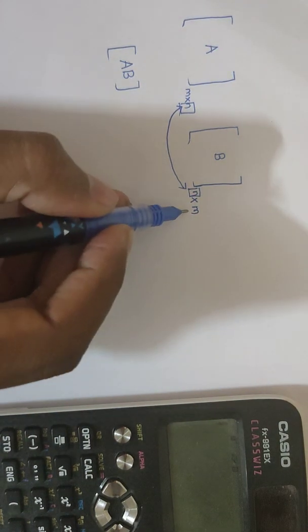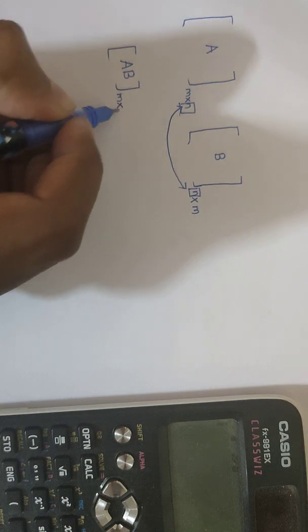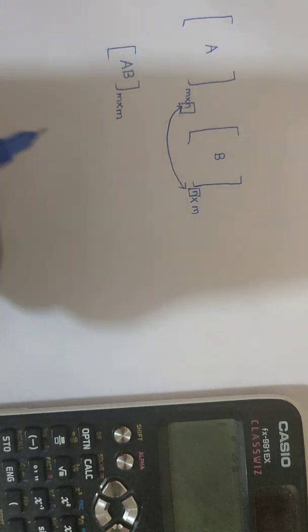Not just this, but also the order of the product would be this cross this. So the order of the matrix product is this.